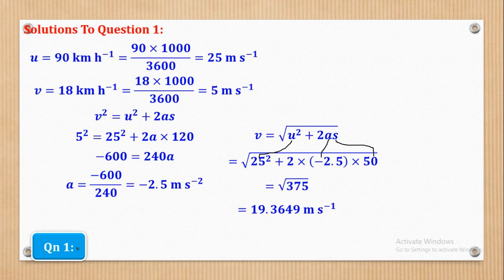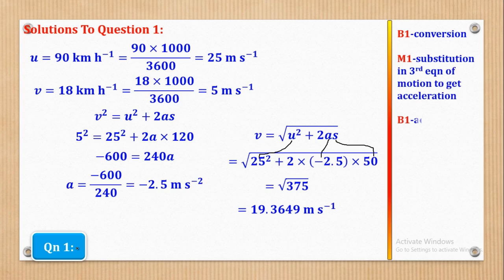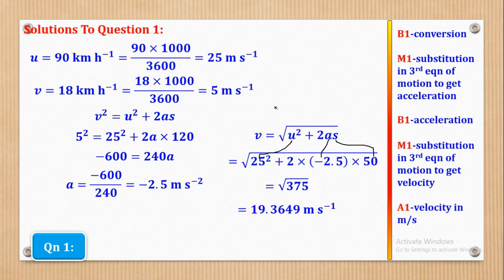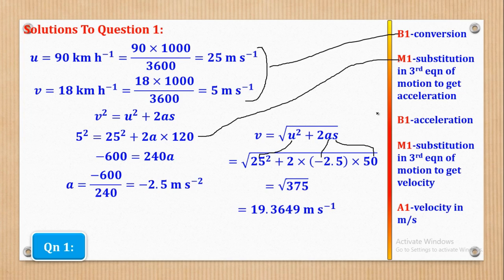Now let's see how the 5 marks could come about. The first mark B1 is for converting from kilometers per hour to meters per second. Then M1 is for substituting in the third equation of motion, and B1 is for obtaining the acceleration. The remaining marks are for the second substitution and correct final answer.